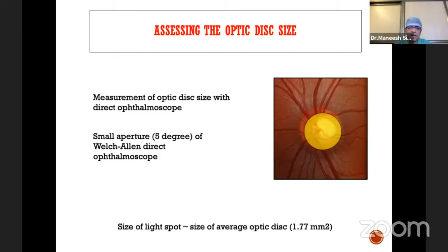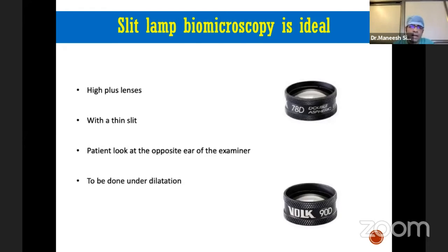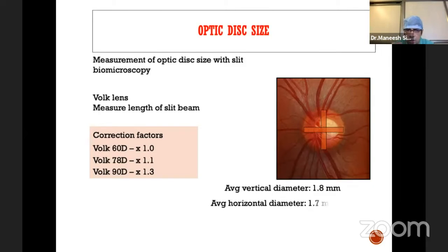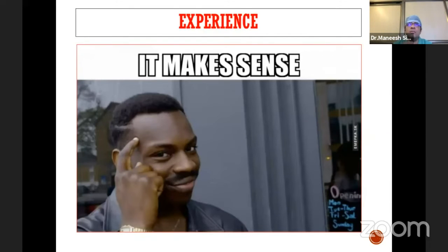How do we understand disc size? Classically, the small aperture — the five-degree spot of the well-calibrated direct ophthalmoscope — corresponds to normal disc size. For those using a slit lamp with high-plus lenses, you can measure disc size using a narrow slit beam and correction factors depending on your lens. For example, with a 90D lens, multiply by 1.3 to estimate the average disc size. With experience you can assess size at a glance, understanding whether a large cup is normal or if subtle glaucoma changes may be present in a small disc.